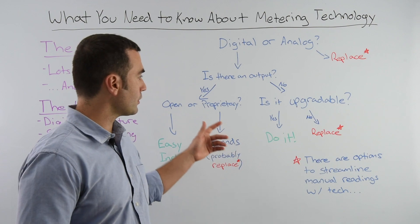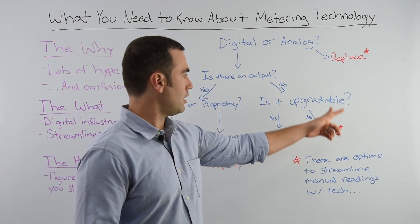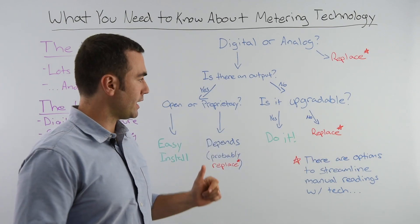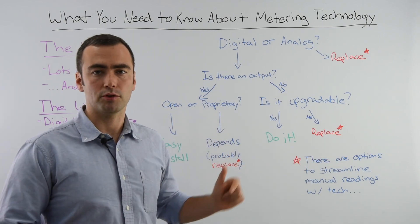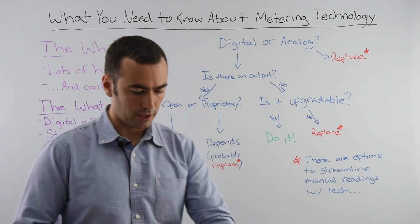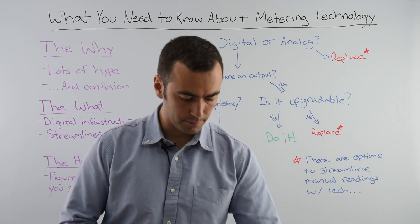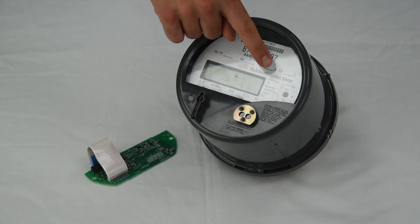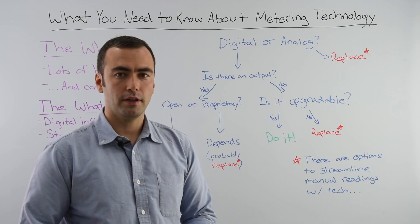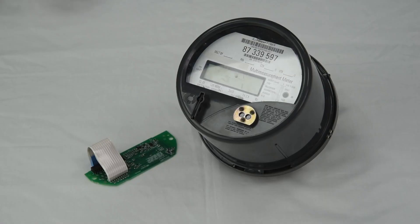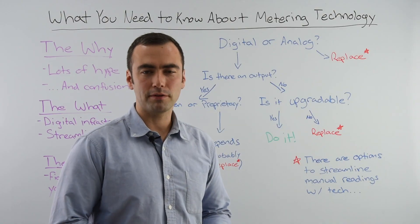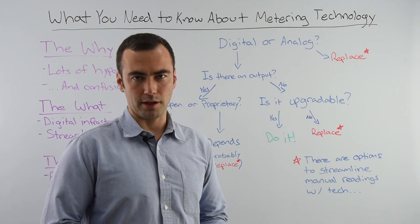Now let's talk about meters without an output and what we can do there. The next thing to determine is whether or not they are upgradable. Here is an example — with this particular model you can see it indicates all the different options that can be installed. And here is an example of an option card that enables a digital output for this meter. If you have one of those, it does make sense to spend the money and do the upgrade.